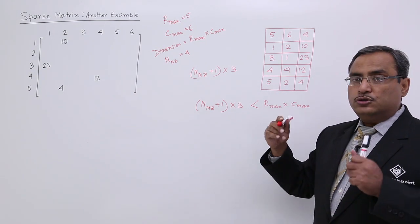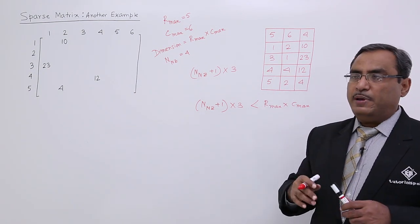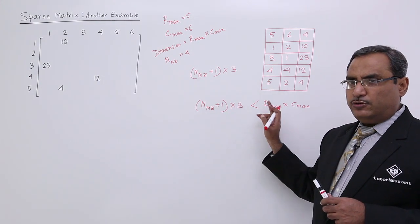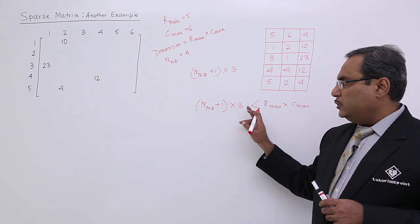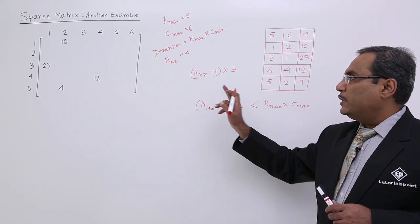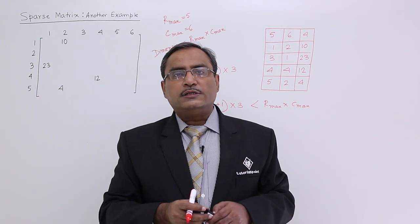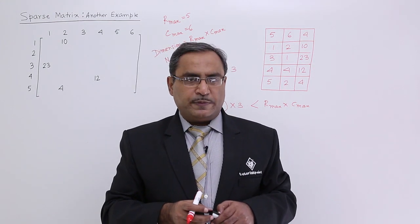Obviously, in that case, it will also occupy more and more space in the memory. This is the inequality after which when this inequality will hold good, then up to that level, this representation is better compared to the original one. In this way, we have solved another problem on this sparse matrix. Thanks for watching this video.